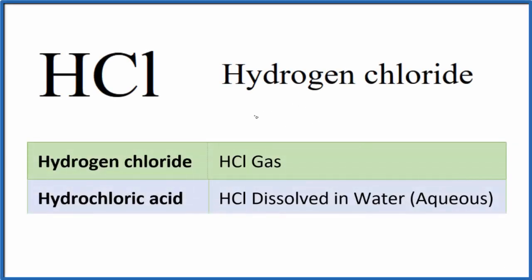In this video, we'll write the Lewis structure for hydrogen chloride. Hydrogen chloride, that's HCl, but it's HCl as a gas. So if you have the name hydrogen chloride, that's HCl gas.